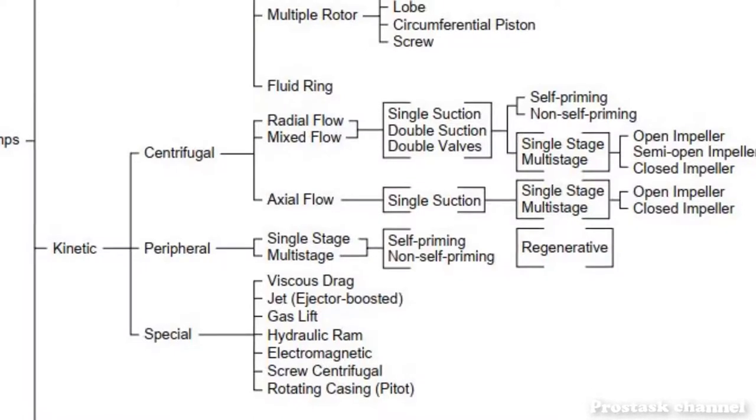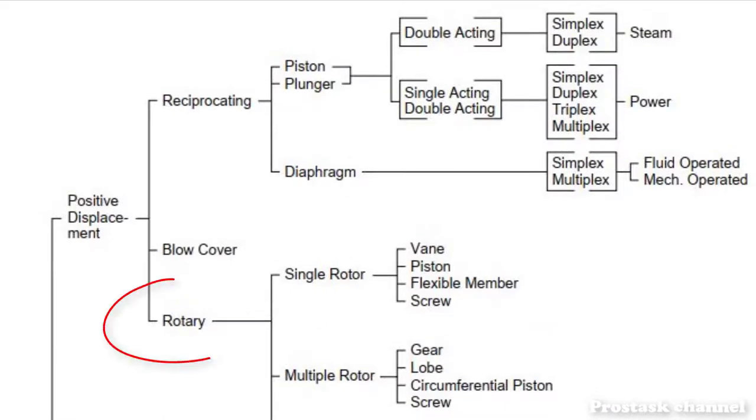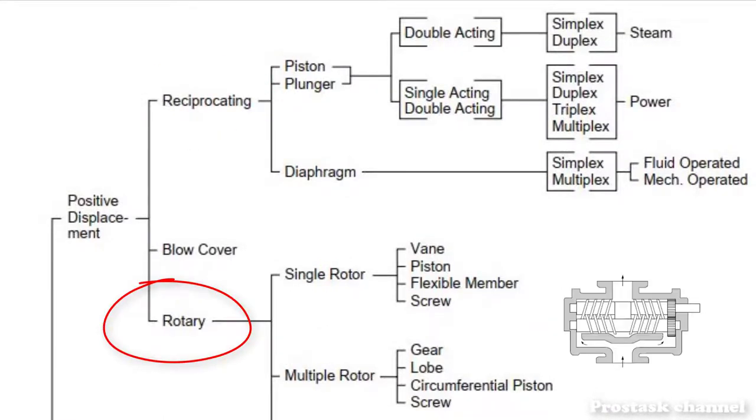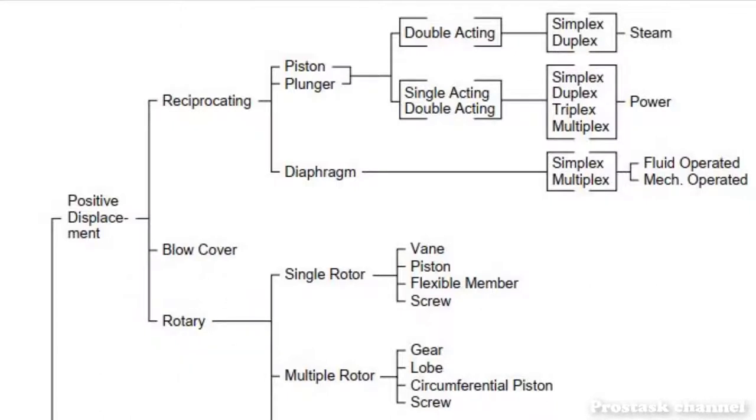Positive displacement pumps can be separated into rotary and reciprocating types. Vane pumps, piston pumps, lobe pumps, gear pumps, and screw pumps are considered rotary pump series. Reciprocating pumps are classified into piston pumps, plunger pumps, and diaphragm pumps.